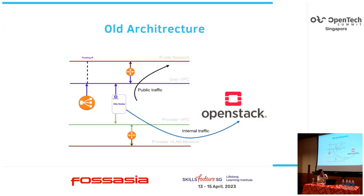Here is the network model of our Kubernetes architecture. VMs of the user cluster are plugged into two VPCs: one is the user VPC and the second is the provider VPC. For requests that need to go out to the internet, they will go through a router. For requests that require administrative interaction with OpenStack, they will go to the provider VPC. For the API server load balancer on the master node, we use a load balancer attached to the VPC and expose it to the internet through a floating IP.